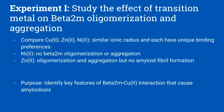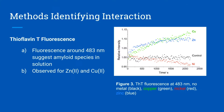Experiment 1 of the paper studies the effect of transition metals on this protein's oligomerization and aggregation. Three transition metals were compared that have a similar ionic radius and each have unique binding preferences. Nickel has no oligomerization or aggregation with this protein. Zinc was found to have both qualities but no amyloid fiber formation was found. The purpose of this study was to identify key features of beta-2-microglobulin and copper interaction that caused amyloidosis.